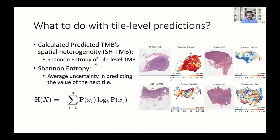Now that we have these tile-level predictions, we decided to look at the spatial heterogeneity of TMB prediction using Shannon entropy of these predictions. This is essentially measuring the average uncertainty in predicting the value of the next tile. We can see that in ground truth, whole exome sequencing-derived TMB values match with TMB-high.